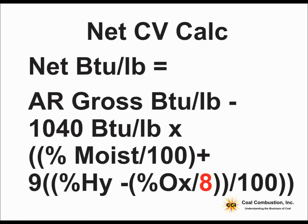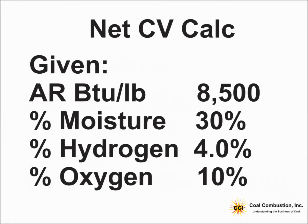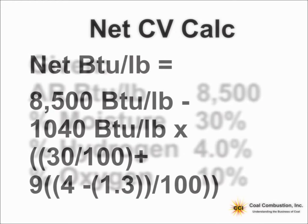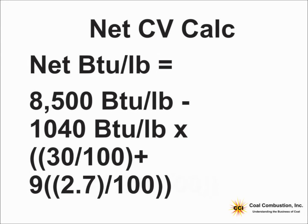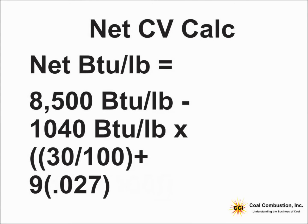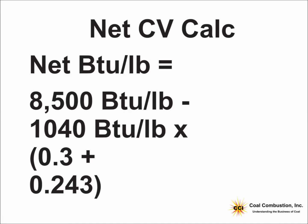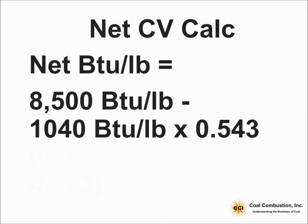Given a typical sub-bituminous coal of about 8,500 as-received BTUs, 30% moisture, 4% hydrogen, and 10% oxygen, if I substitute all those values into the equation, this is what it looks like. First, we correct for that hydrogen: we get the 1.3 factor from the oxygen, giving 2.7% hydrogen. Divide by 100 to get 0.027, multiply by 9, and get 0.243 — that's the percent in pounds of moisture that the hydrogen forms.